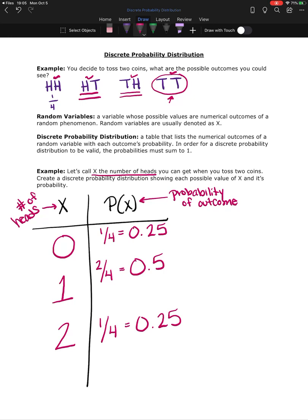So then if I check to make sure that this sums to one, if I take the sum of this row, 0.25 plus 0.5 plus 0.25 does sum to one. So this is a valid distribution for the number of heads when you flip two coins.